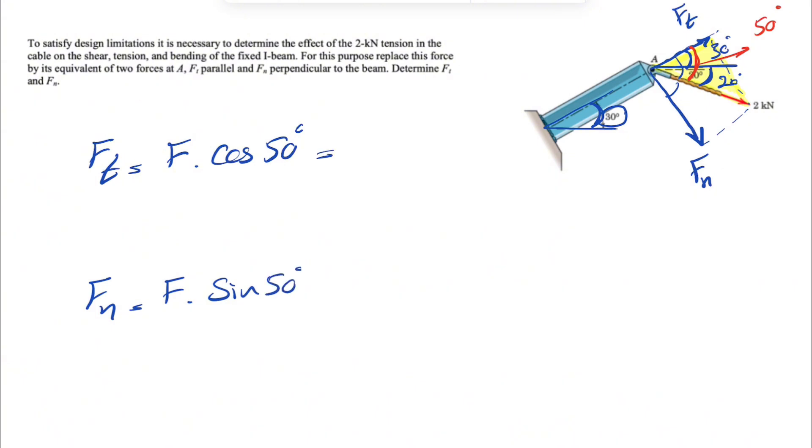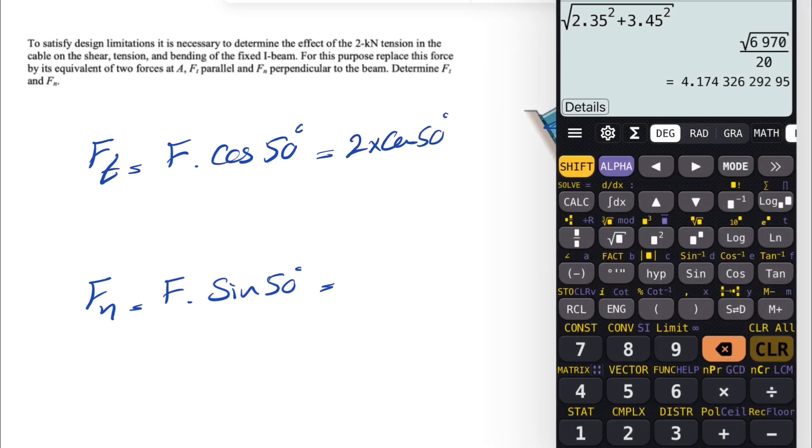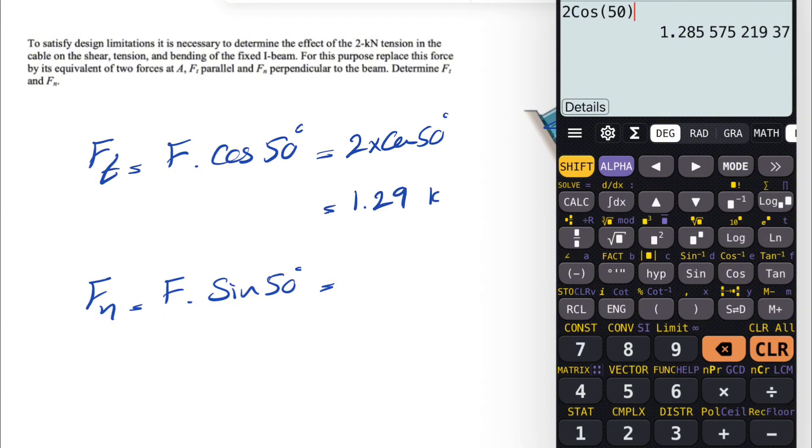So all we need to do is just to calculate these two. Our F is 2 times cosine of 50. Let's see what we get. 2 times cosine of 50. That's going to give us 1.29 kilonewtons. And 2 sine of 50 is going to give us 1.53 kilonewtons.